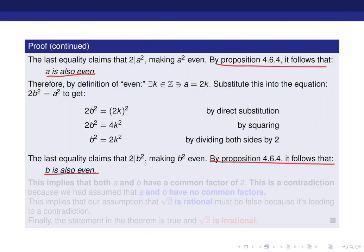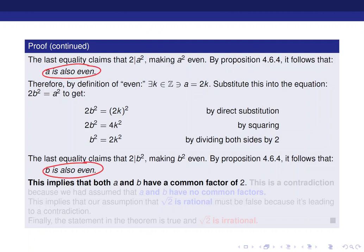So at this point in time, what we're saying is that a is even, and b is also even. Well, that means that they have to have a common factor. At least the number 2 is common, because they're both even. Remember, b squared is even, so that means b is even. a squared is even, so that means a is even.